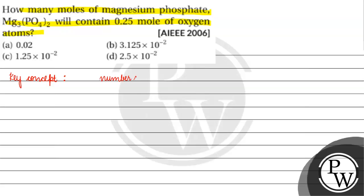The number of moles is basically equal to the number of elementary entities divided by Avogadro's number.